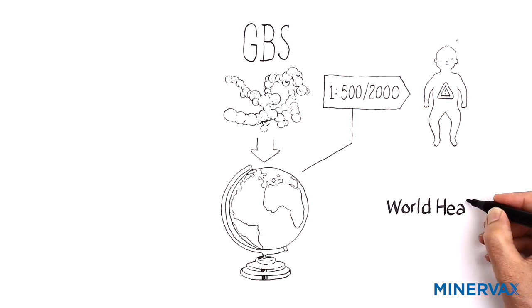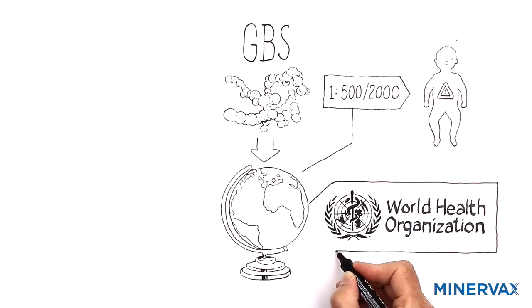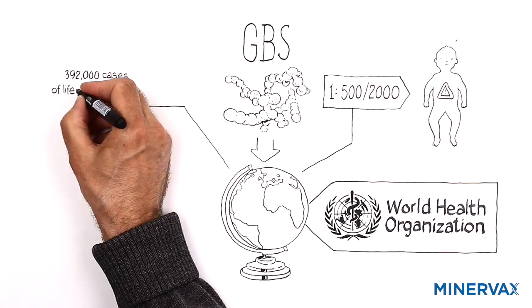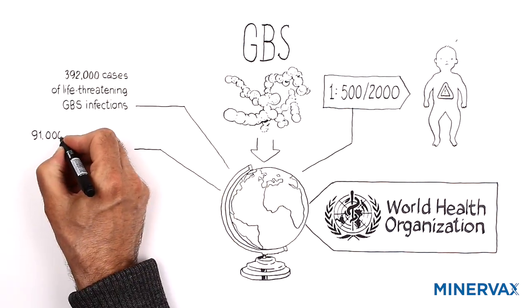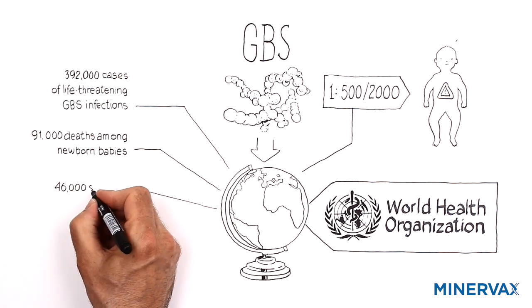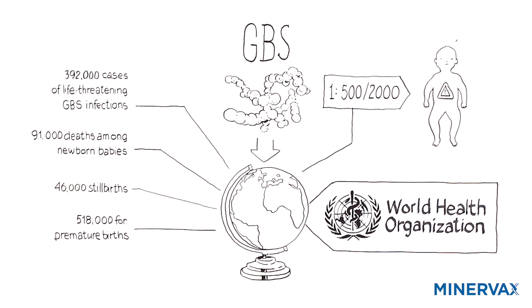The World Health Organization has recently estimated that each year, Group B streptococci are the global cause of 392,000 cases of life-threatening GBS infections, 91,000 deaths among newborn babies, 46,000 stillbirths, and 518,000 premature births.